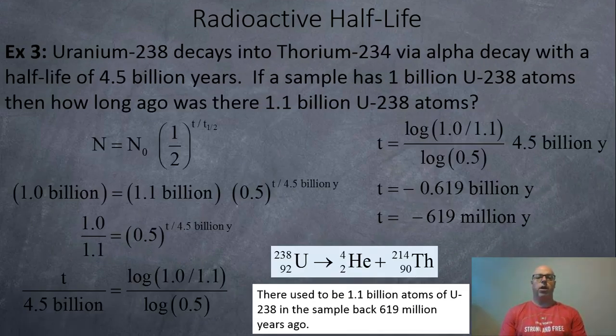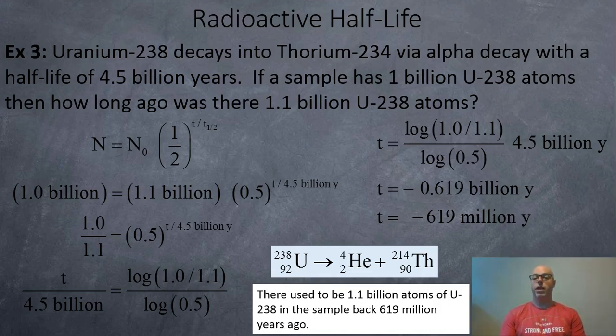So here's a fission one. So you had some uranium-238, it decays into thorium-234 via alpha decay with a half-life of four and a half billion years. If a sample has one billion uranium-238 atoms, then how long ago was there 1.1 billion?